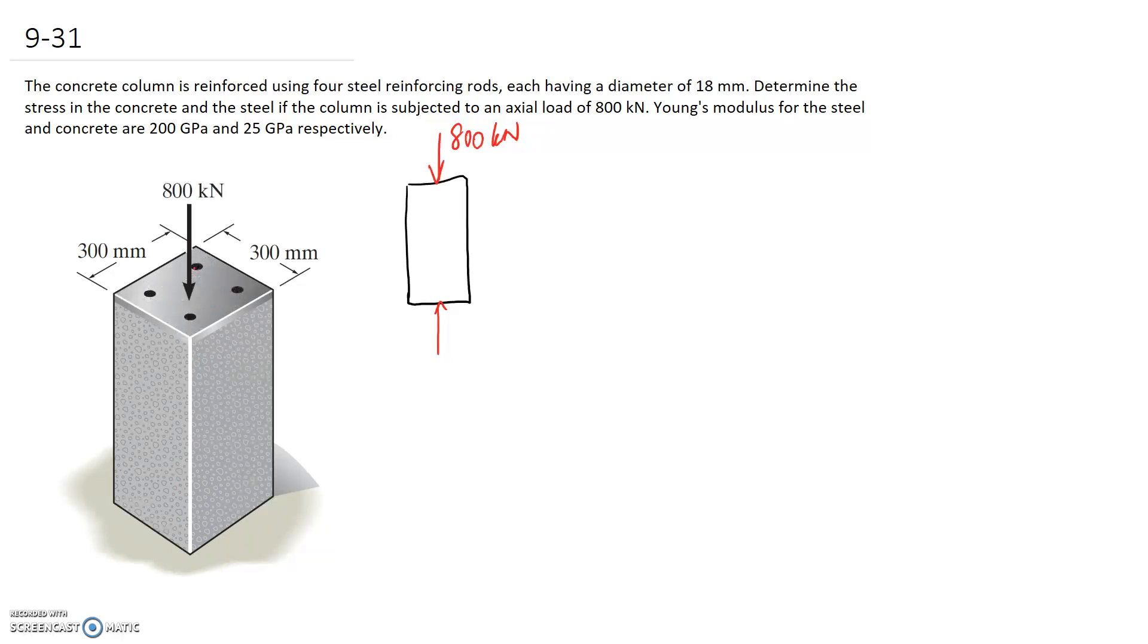Similarly, these are all distributed equally as well, the rods that is. So they should be applying a force that can be simplified to a point straight through the middle. I can't draw both of them straight through the middle, so I'm going to draw them really close to each other in the centre. So one of these is the force being taken by the steel rods and the other one is the force being taken by the concrete.